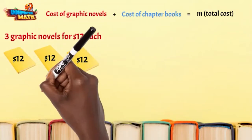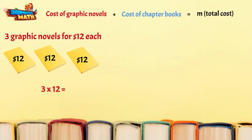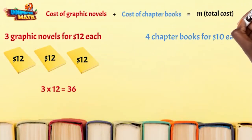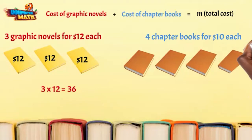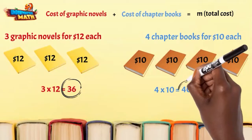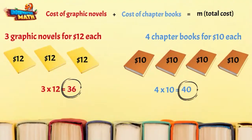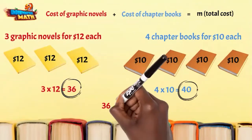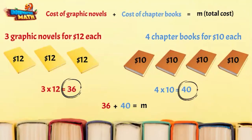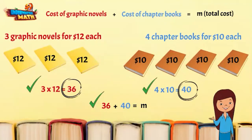Three groups of 12 is 36. For the chapter books, we have four of them at $10 each, so our second equation is 4 times 10, which is 40. For our last equation, we add these two costs together to get our total cost: 36 plus 40 equals m. Brilliant — we found our set of equations.